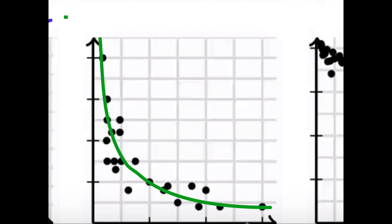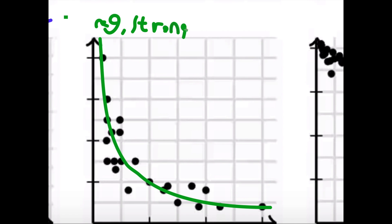I think this is the line of best fit. I would say it's negative, pretty strong, and I would also say it's non-linear.